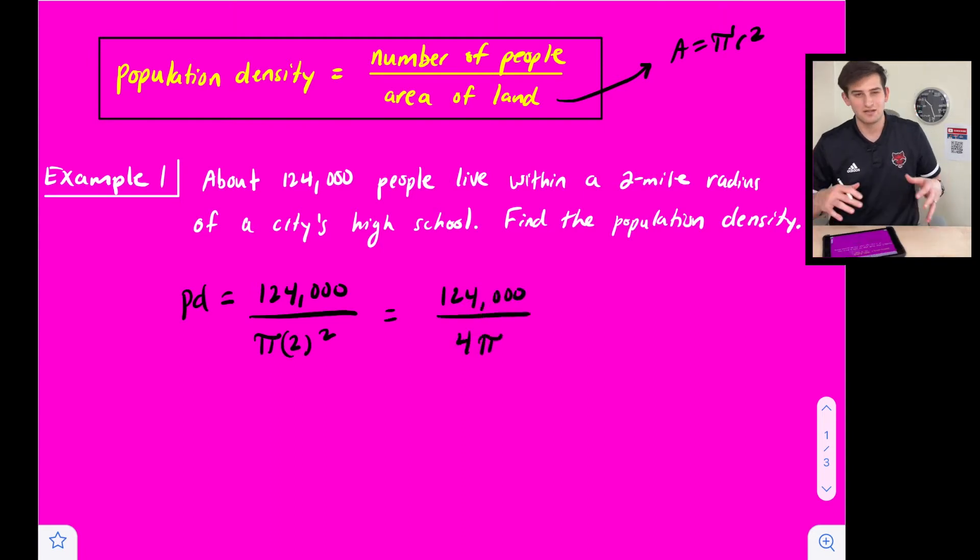Now if you're doing this in a calculator be careful. If you do 124,000 divided by four pi like this, then it's going to actually do 124,000 divided by four and then multiply that by pi, which is not what we want. So in your calculator do 124,000 divided by and then put four pi in parentheses. Now that'll give you your correct answer.